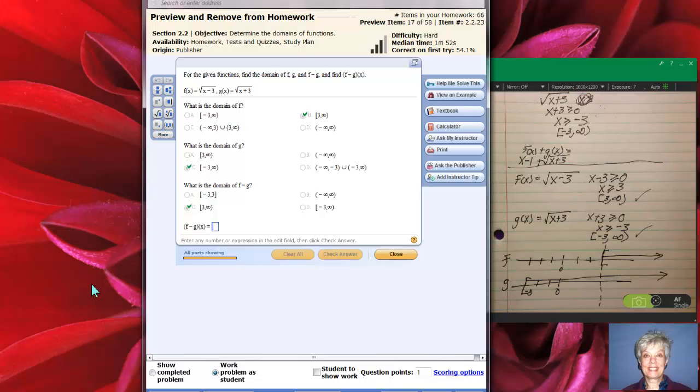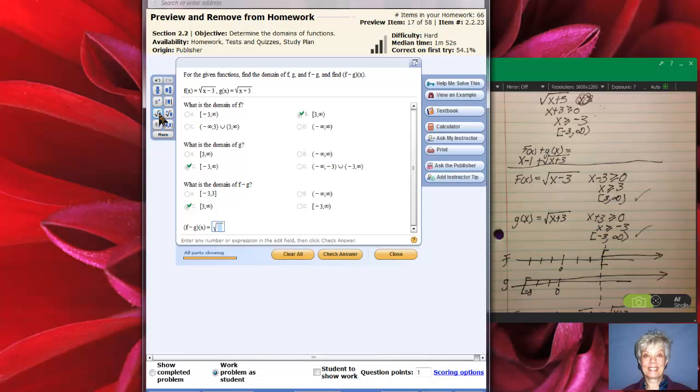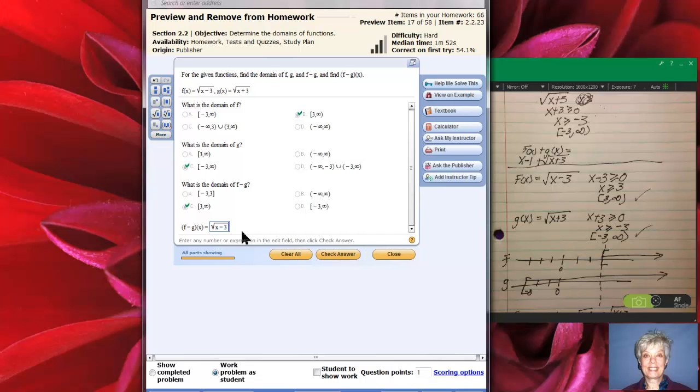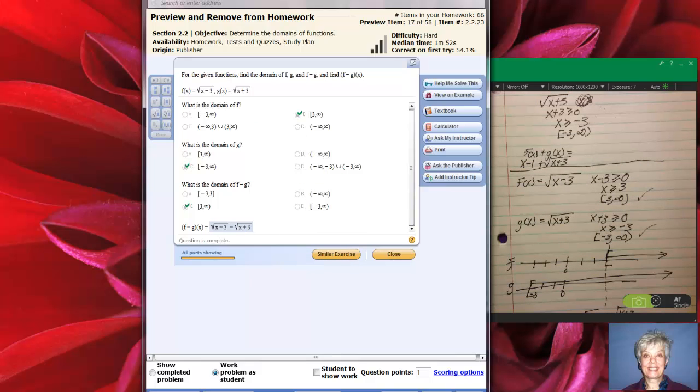And now they're asking us, well, what is it? Now this is going to be really easy. f of x minus g of x, which is what f minus g of x is, is going to be f of x, the square root of x minus 3, minus g of x, the square root of x plus 3. And there is no way you can combine those terms because they're not like radicals. So I'm going to come over here, and I'm going to type, what am I going to type? I'm going to type x minus 3, and then I'm going to hit the right arrow key so I can come outside. And then I'll hit minus, and then square root x plus 3. And now I'll check my answer, and there we are. Here we are.